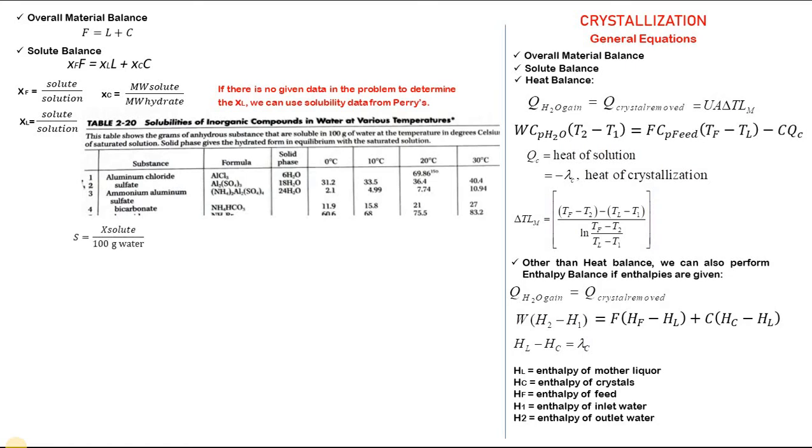Solubility here is equal to solubility of the solute per 100 grams of water. So if we want to get the grams of solute, x is equal to 100 times s, and finally xl is equal to the solute fraction: solute over solution.